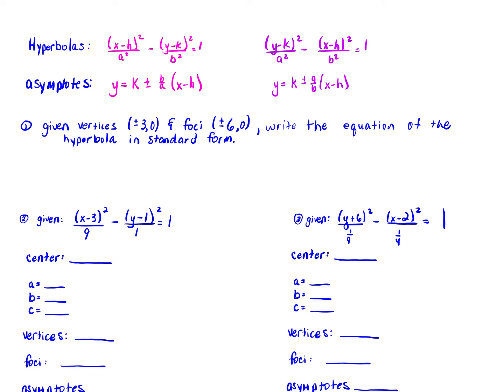So first, we're going to use our standard form of a hyperbola, but we want to know which one to use — this one, if our vertices and foci are on a horizontal line so our hyperbola looks like this, or the other one if it's vertical. So let's figure out which one we're going to use.